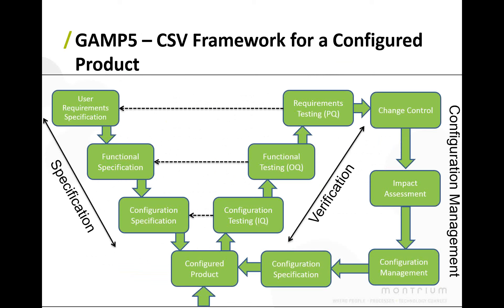This is the V-diagram for a configured product from GAMP. On the left-hand side we have all our specifications. For a configured product, we still need a user requirement specification describing how we're going to use the product. We'll also typically have a functional specification describing how the system functions in relation to those user requirements, and then a configuration specification. There are no design documents because there's no real coding — we're only doing configuration.